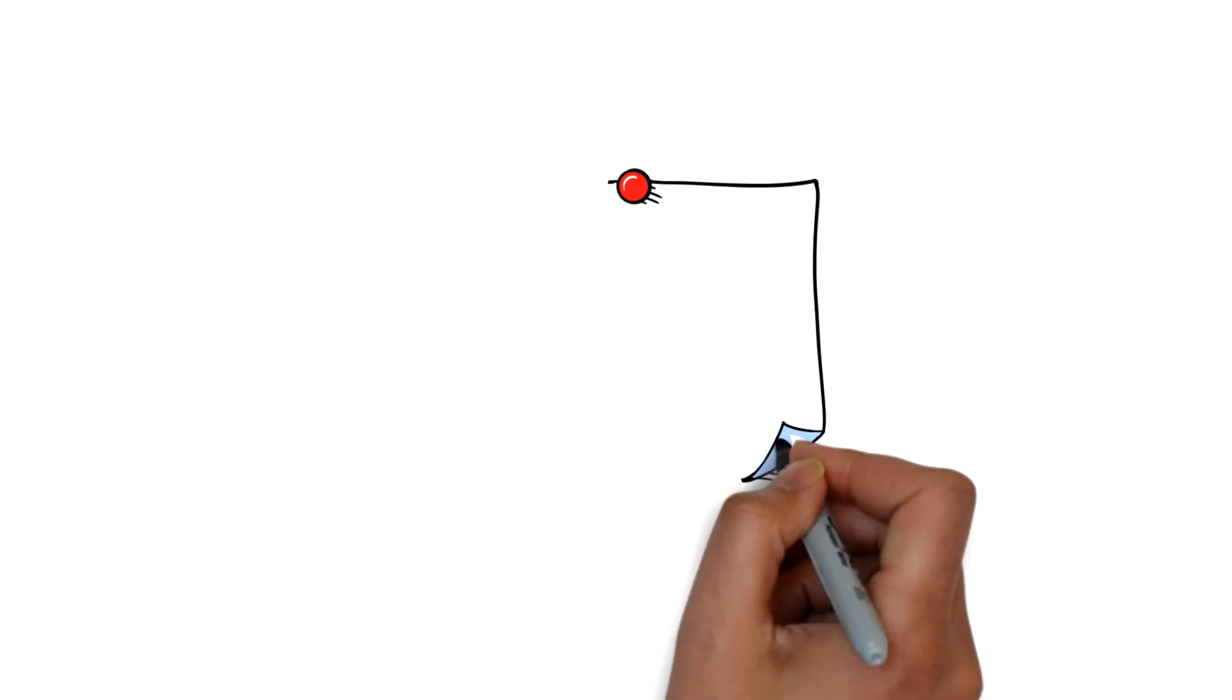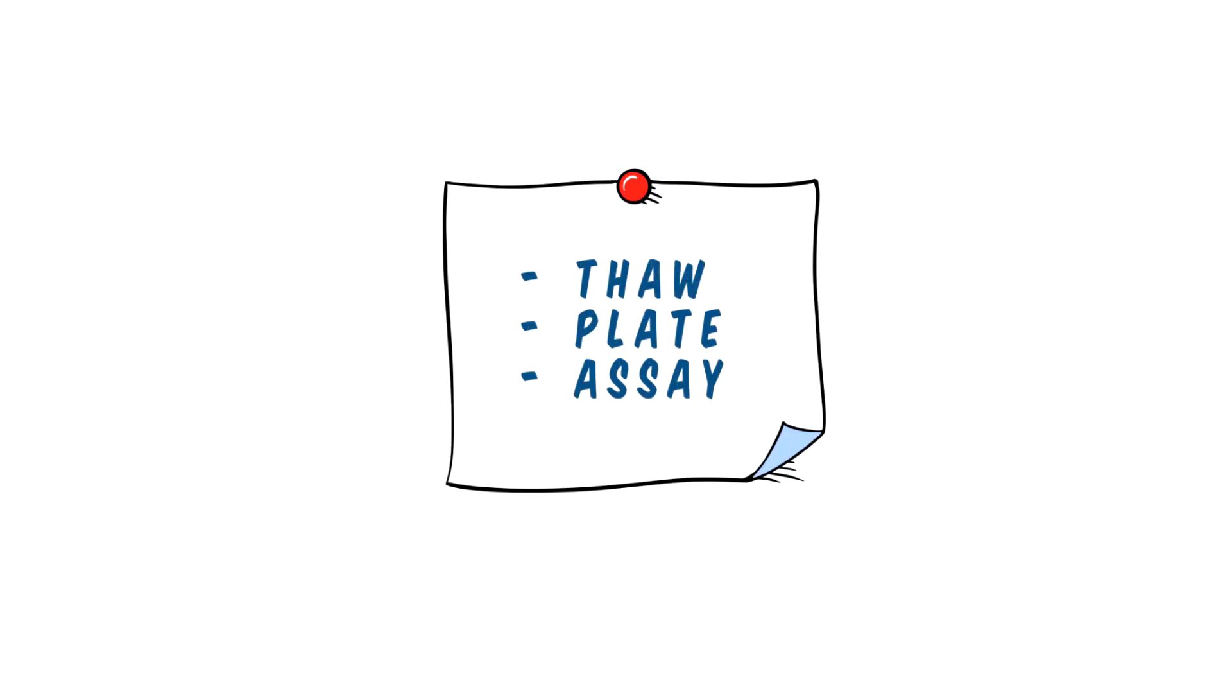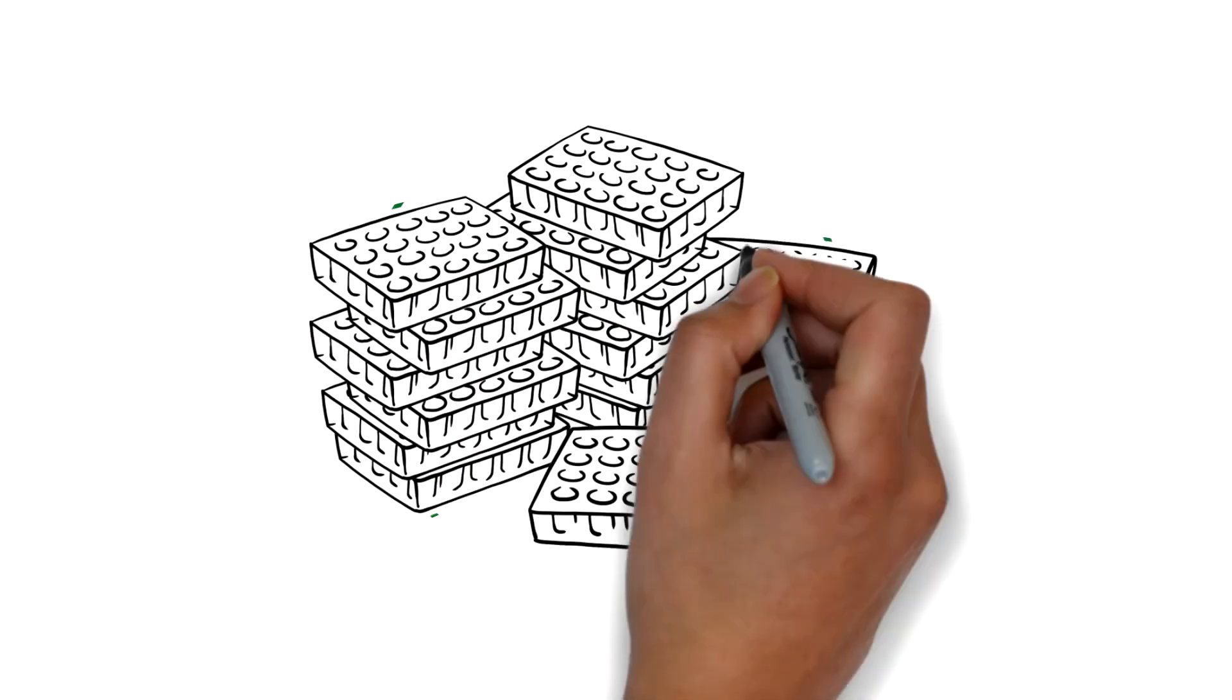Plus, iCell dopa neurons are simple to use. Just thaw, plate and assay. Whenever an experiment needs to be scaled up, it's as easy as opening more vials.